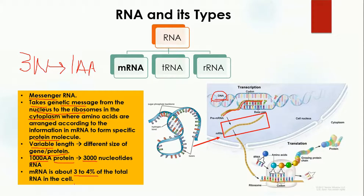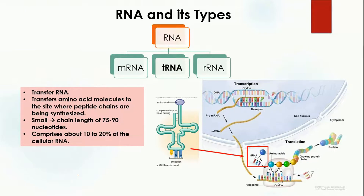Messenger RNA makes up about 3 to 4 percent of the total RNA in the cell. Although only a small amount is present, it is very important because it encodes the proteins that perform specific functions in the body.